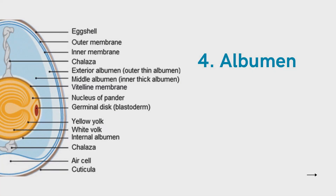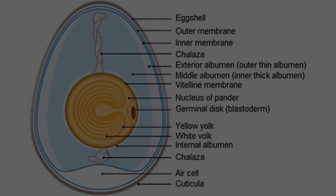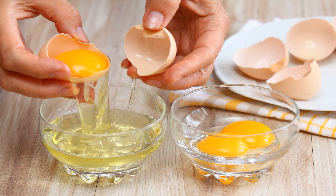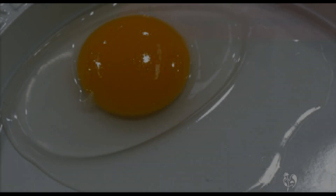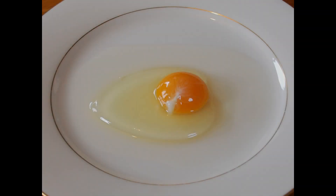The albumin has two parts: exterior albumin and middle albumin. The exterior albumin is also called outer thin albumin, which is a narrow fluid layer next to the shell membrane. The middle albumin is also called inner thick albumin. The inner thick, chalaziferous layer is a dense, matted, fibrous capsule of albumin around the vitelline membrane of the yolk. The matted fibrous capsule terminates on each end in the chalazae, which are twisted in opposite directions and serve to keep the yolk centered. This part of the egg is an excellent source of riboflavin and protein. In high quality eggs, the inner thick albumin stands higher and spreads less than thin white. In low quality eggs, it appears thin white.